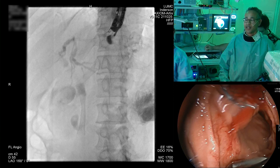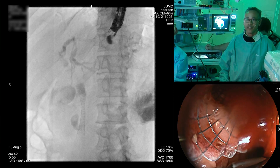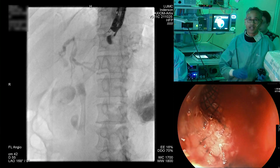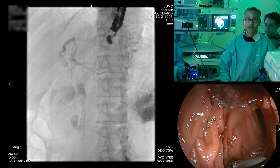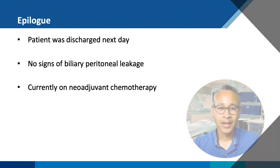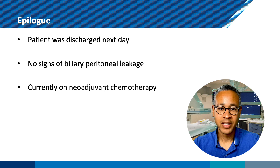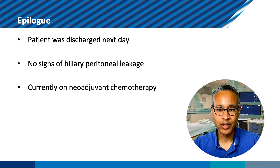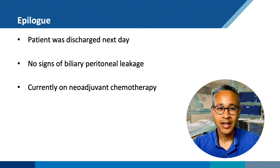This is, I hope, a nice demonstration of EUS anterograde drainage with anterograde placement of a self-expandable metal stent. The patient was discharged the next day without any signs of biliary peritoneal leakage and is currently on neoadjuvant chemotherapy. Keep in mind that if you apply anterograde biliary drainage, you have the option of anterograde stenting as well as EUS hepaticogastrostomy if needed. Thanks for your attention and see you on the next one.